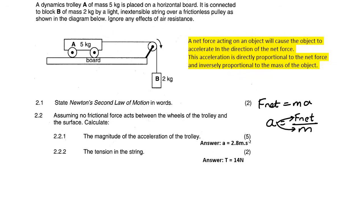Question 2.2: assuming that there is no friction acting on the wheels and the surface — so there's no friction at all, we must remember that — calculate the magnitude of the acceleration, and they also want us to calculate the tension. If you've watched any of my videos where we've got two objects connected by a rope, you would know that I've got a three-step system to solve these types of questions.